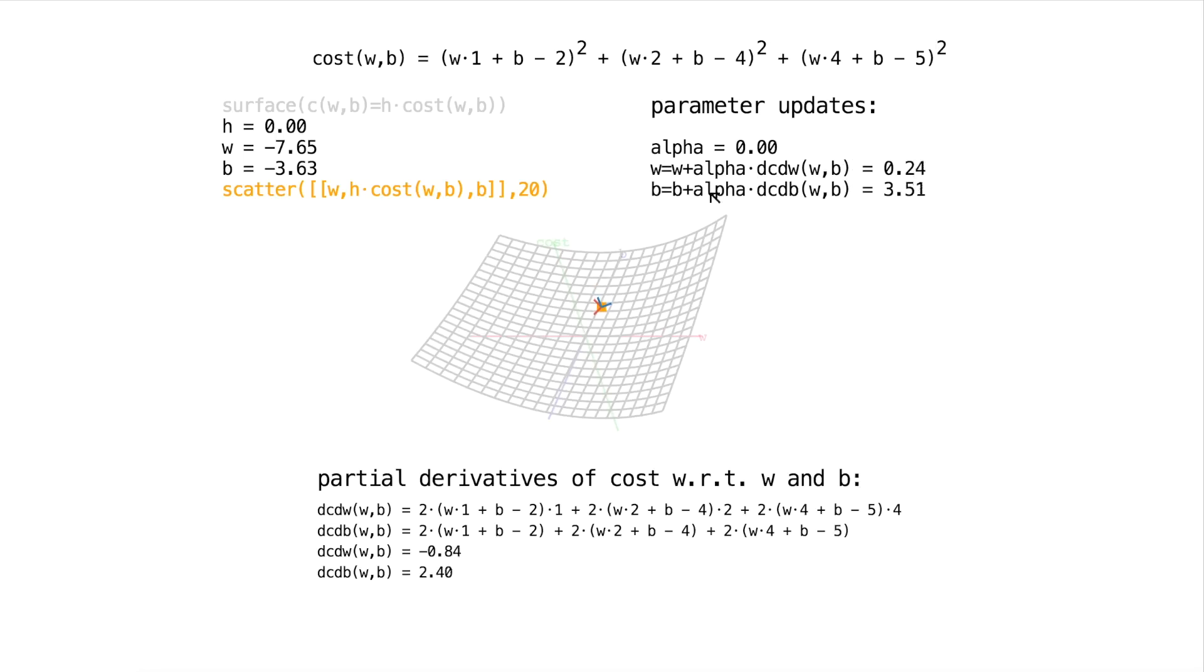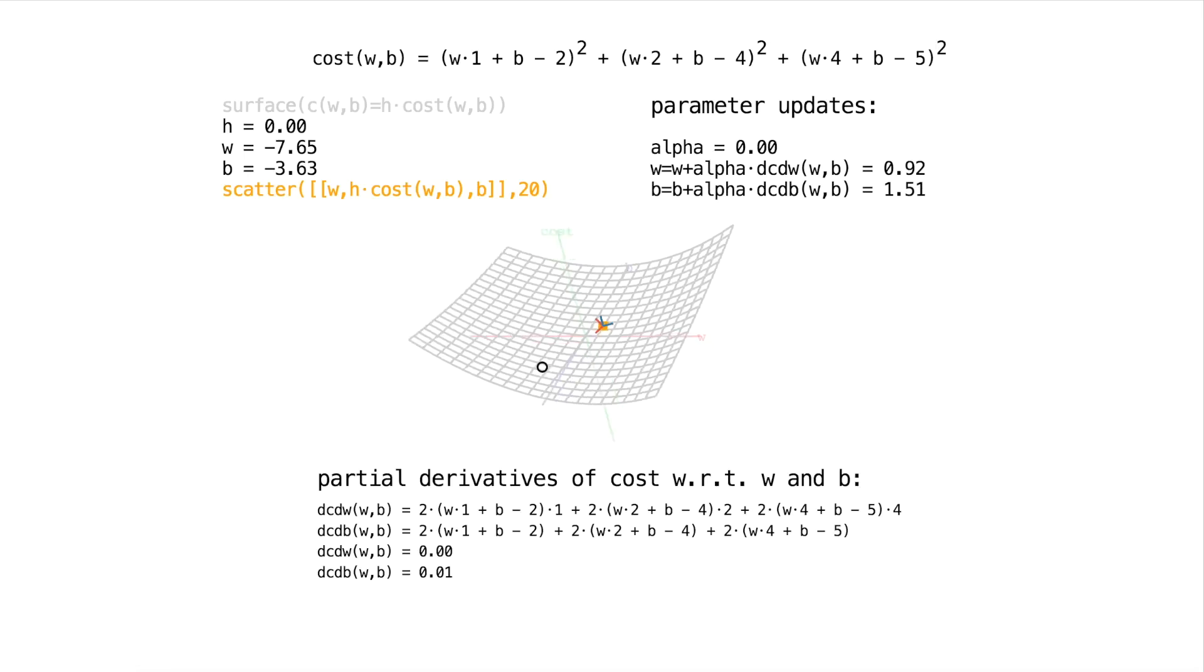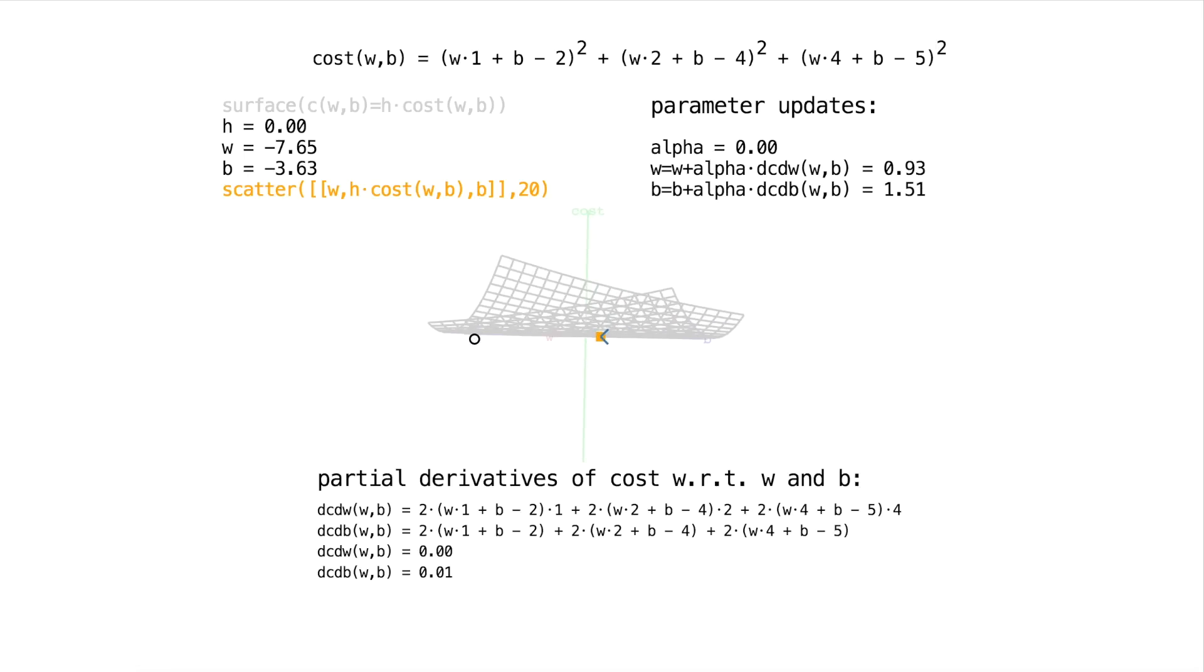And if I make these run continuously, continuously updating our parameters, and typically you'd want to calculate the change to w and the change for b beforehand and then apply it to w and b at one step. But it works this way as well, where we're alternating. We're updating w, then we're updating b, then we're updating w and updating b. But, anyways, if I run those continuously, we've found the minimum point of our cost function surface.